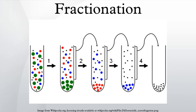Fractionation is a separation process in which a certain quantity of a mixture is divided during a phase transition into a number of smaller quantities in which the composition varies according to a gradient. Fractions are collected based on differences in a specific property of the individual components. A common trait in fractionations is the need to find an optimum between the amount of fractions collected and the desired purity in each fraction.